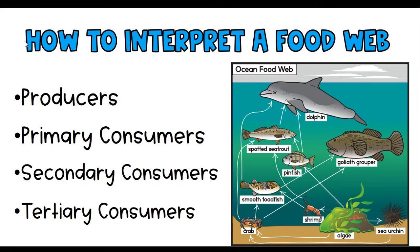The next one is a tertiary consumer. In some food webs, you might see a top predator — those animals at the top of the food chain, like humans, lions, dolphins, or bears. Tertiary consumers are any organism that is the third consumer in that food chain. Using the shrimp again: the shrimp is the primary consumer, we go up to the smooth toadfish as the secondary consumer, and then the smooth toadfish is consumed by the goliath grouper, making the goliath grouper a tertiary — meaning third — consumer. The dolphin is also a tertiary consumer, as we can see the arrow going from the smooth toadfish to the dolphin.